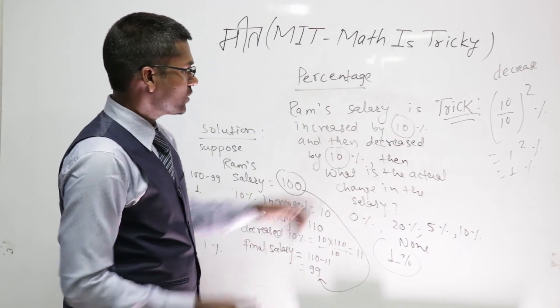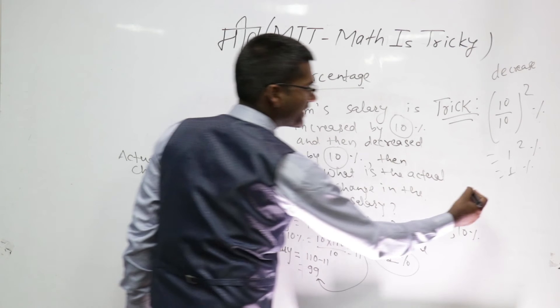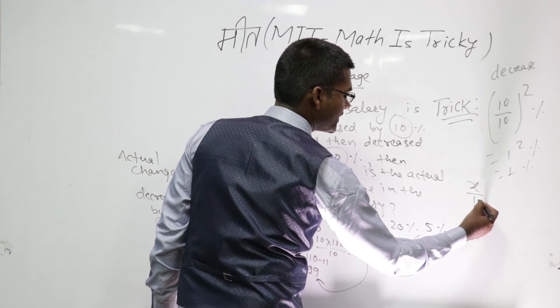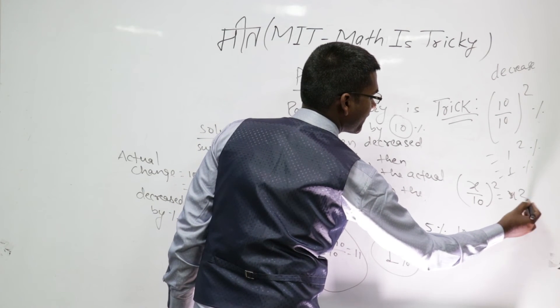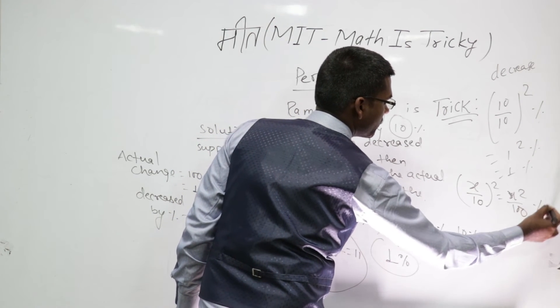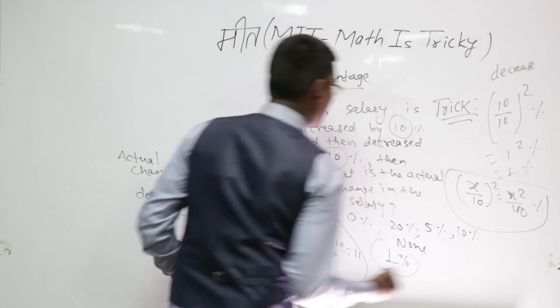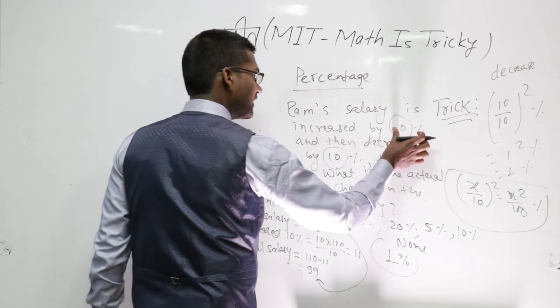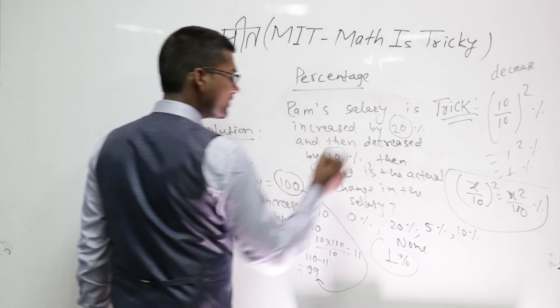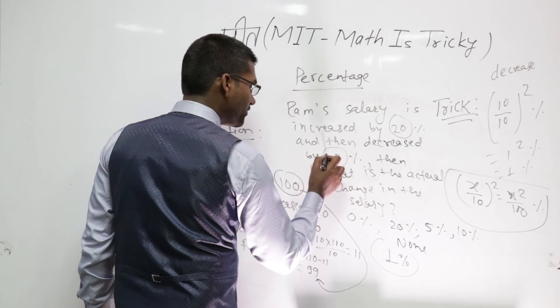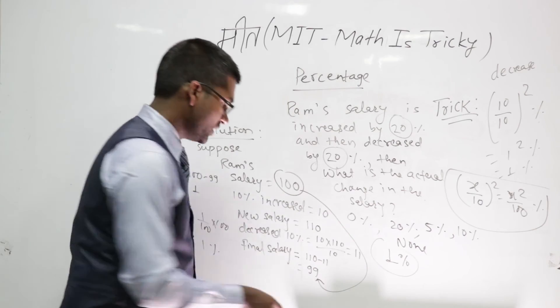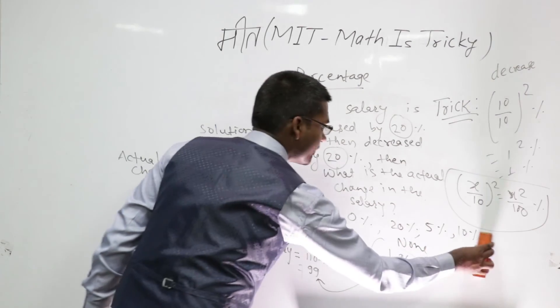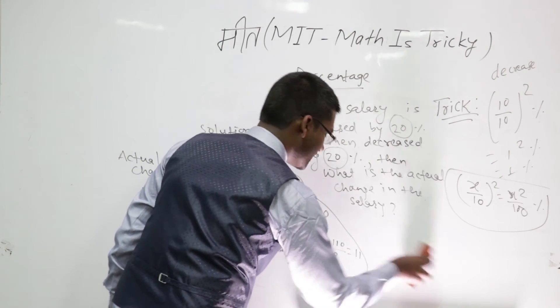There will always be a decrement in the salary by 1 percent. Suppose now, for you, just change this: suppose it is increased by 20 percent and decreased by 20 percent, then what will be the change? Please solve this by yourself and write the answer in the comment box.